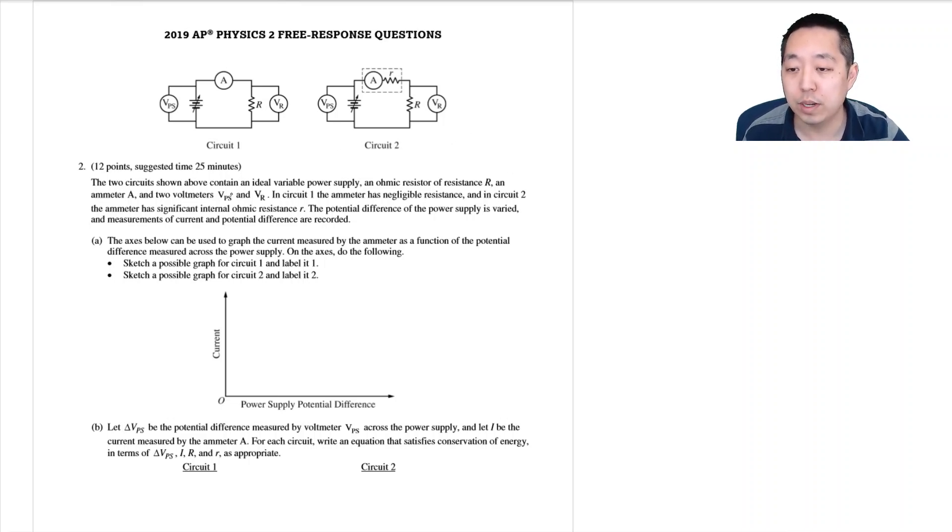The two circuits shown above contain an ideal variable power supply, an ohmic resistor resistance R, and an ammeter and two voltmeters VPS and VR. In circuit one the ammeter has a negligible resistance and in circuit two the ammeter has significant ohmic resistance r. The potential difference of the power supplies is varied and the measurements of current and potential difference are recorded.